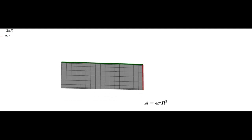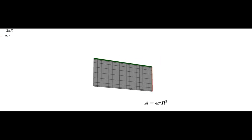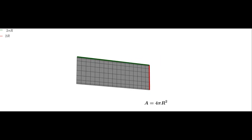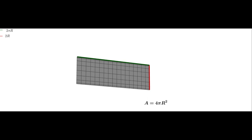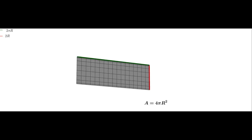The length of the rectangle equals the circumference of the base of the cylinder, that is 2πr. And the breadth of the rectangle equals the height of the cylinder, which is equal to the diameter of the sphere, that is 2r. Therefore, the area of the rectangle equals L × B, that is 2πr × 2r, which equals 4πr² square units.